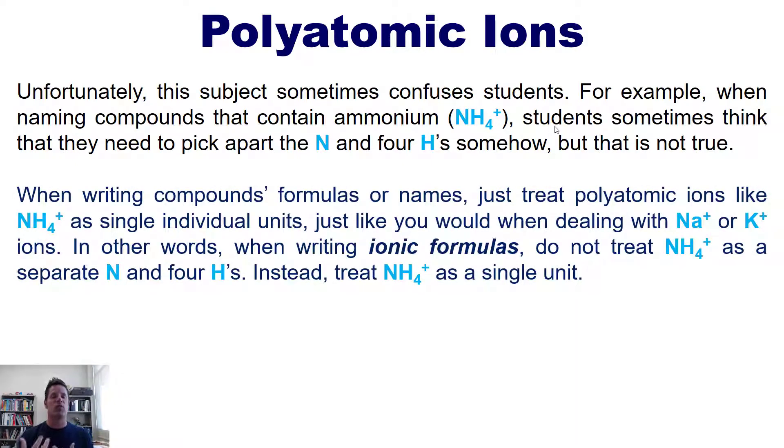When writing compounds' formulas or names, just treat polyatomic ions like NH4+ as single individual units, just like you would when dealing with Na+ or K+ ions. In other words, when writing ionic formulas, do not treat NH4+ as separate N and four H's. Instead, treat NH4+ as a single unit, as if it were a single atom with a plus charge, at least as far as naming and bookkeeping goes.